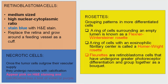On histopathology, retinoblastoma cells are medium-sized cells with a high nucleocytoplasmic ratio. They stain blue. Necrotic cells appear pink on H&E staining, and calcification has a hint of violet or purple. Rosettes are grouping patterns seen in more differentiated cells. A ring of cells surrounding an empty lumen is known as a Flexner-Wintersteiner rosette. A ring of cells with an eosinophilic fibrillary center is called a Homer Wright rosette. Fleurettes are retinoblastoma cells that have undergone photoreceptor differentiation and grouped together as a bouquet.